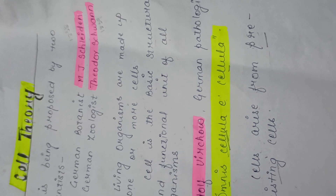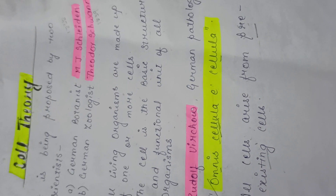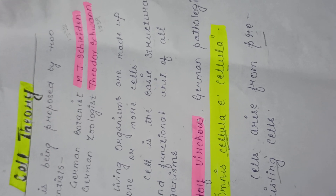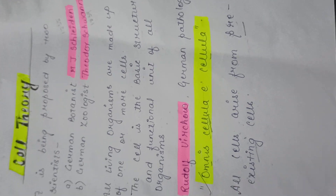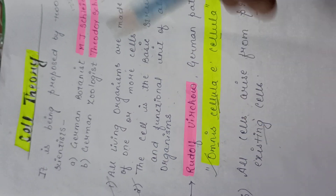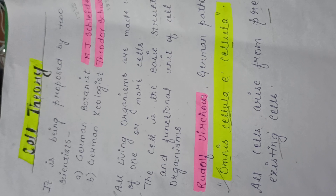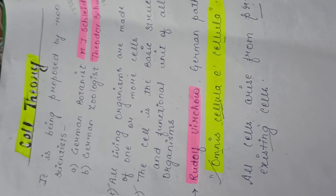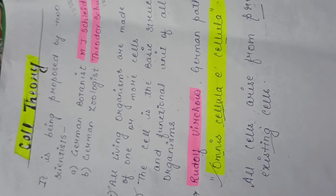A cell is basically microscopic, meaning it cannot be seen by our naked eye, and a microscope is used to observe it. According to cell theory, these three important postulates apply. In the next video, we will be covering the cell's shape, size, and the types of cells — that is, prokaryotes and eukaryotes. Stay tuned, and thank you so much.